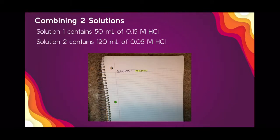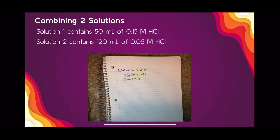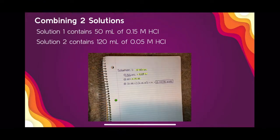First, I need to convert 50 milliliters and 120 milliliters into liters. Then I need to figure out the moles of solute in each solution separately. Starting with solution one, I multiply the liters of solution by the molarity to get moles of solute. Converting 50 milliliters gives 0.05 liters. Multiplying 0.05 liters by 0.15 molar gives 0.0075 moles of solute in solution one.